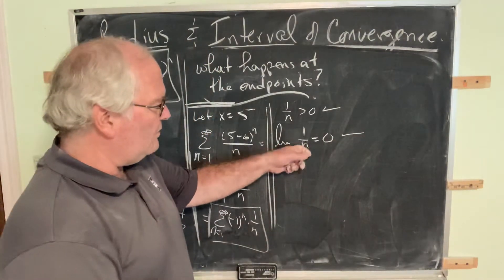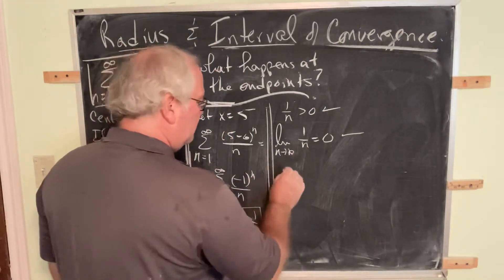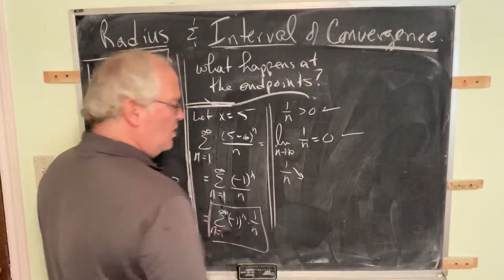As n goes to infinity, this is 1 over infinity. That's zero. And the non-alternating portion must be decreasing. Is 1/n decreasing?